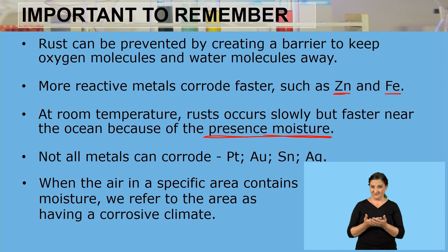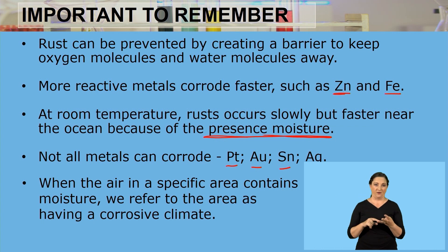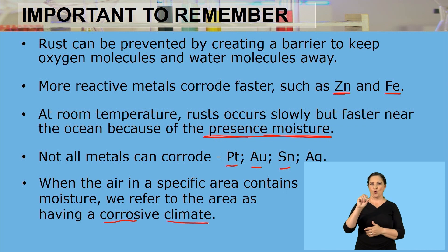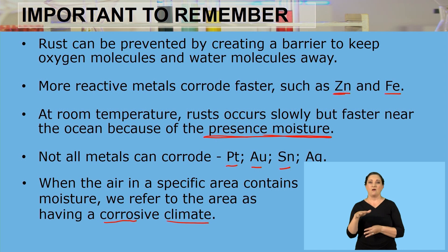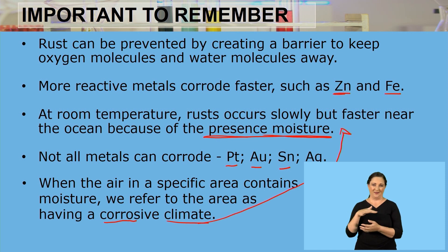Not all metals can corrode. The metals that cannot corrode are platinum, gold, tin, and silver. And lastly, when the air in a specific area contains moisture, we refer to that area as having a corrosive climate. If an area contains a lot of moisture, we say it has a corrosive climate because rust and corrosiveness occur faster in the presence of moisture.